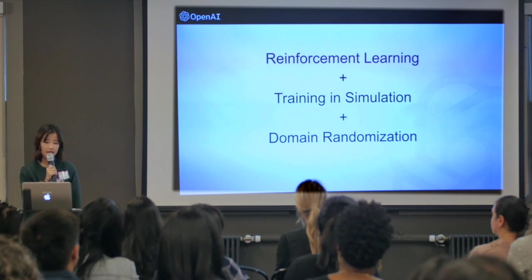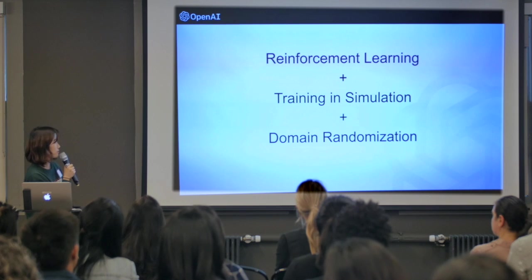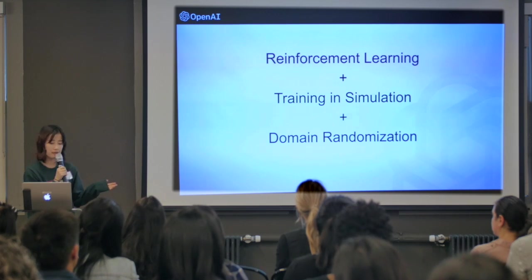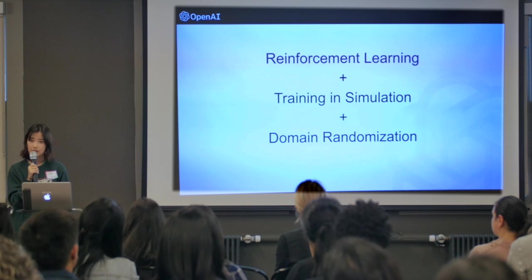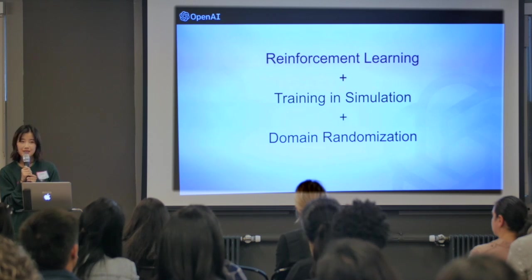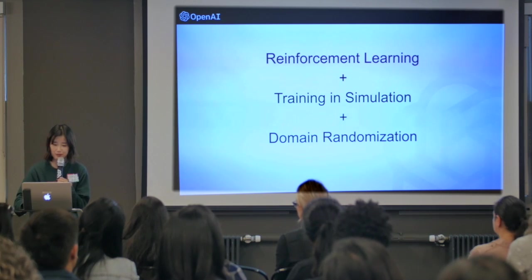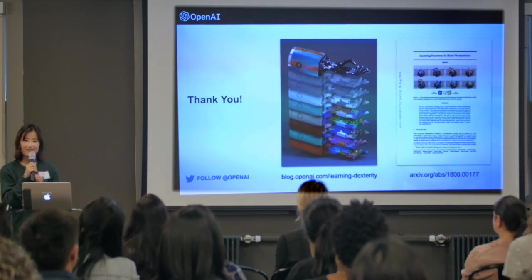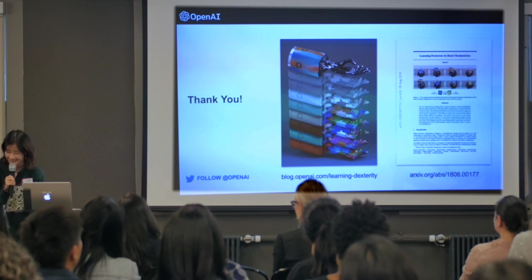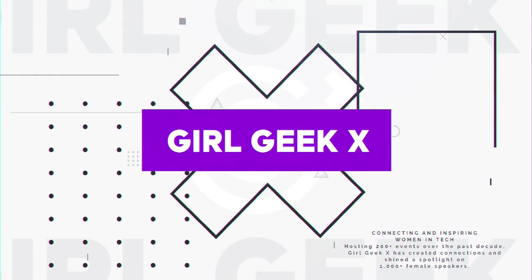To summarize: we've shown that reinforcement learning plus training in simulation plus domain randomization works on a real robot, and we'd like to push it forward. Thank you so much.